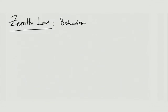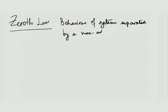What we will do is take the formulation of zeroth law properly. We will say the zeroth law is our understanding of the behaviour of two systems — plural, two systems minimal — separated by a non-adiabatic boundary. If first law was our understanding of the behaviour of a system bounded by an adiabatic boundary, restricted only to work interaction, our zeroth law will tell us what happens when two systems interact across a non-adiabatic boundary.